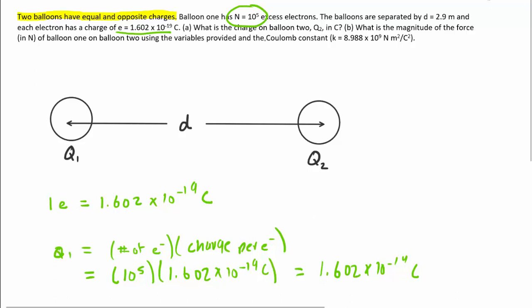Now, technically, because balloon one has an excess of electrons rather than protons, we would have to put a negative sign onto that charge because, of course, electrons bear a negative charge. So let's label that on our picture that we have the charge on balloon one.